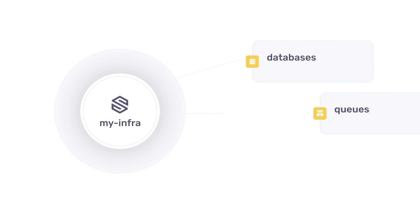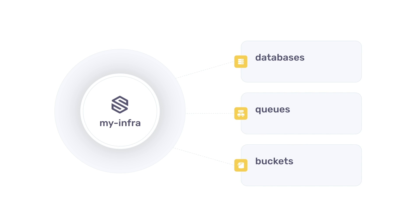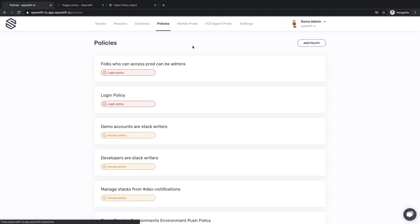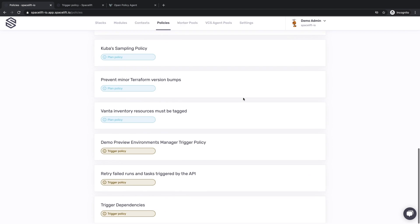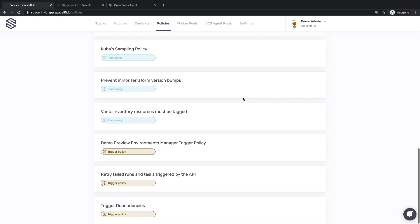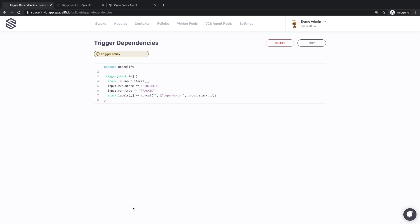Last but not least, the trigger policy. This one is probably the most difficult to understand, and the most powerful too. It lets you create arbitrary workflows and pipeline structures on top of Spacelift stacks. It is triggered when a run finishes execution on a stack, and it uses the list of introduced resource changes as part of the input. The other part of the input is the list of all other stacks in the account. This policy's outcome is the list of stacks that need to update in response to this event. The trigger policy shines when stacks are dependent on one another, or when they need to deploy in a strict order, such as in the case of complex multi-stage, multi-regional rollouts.